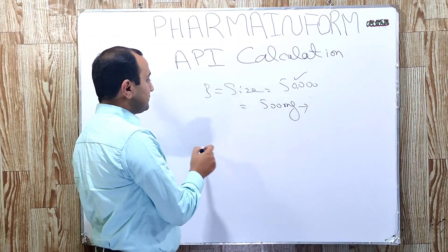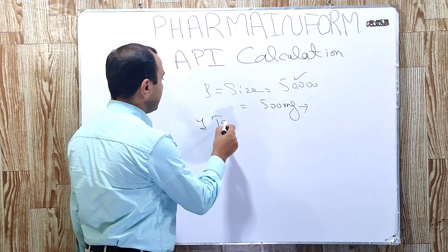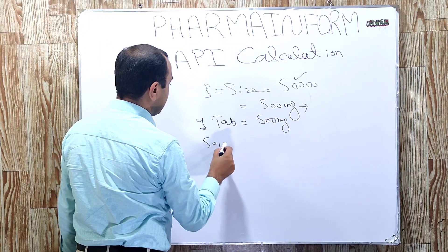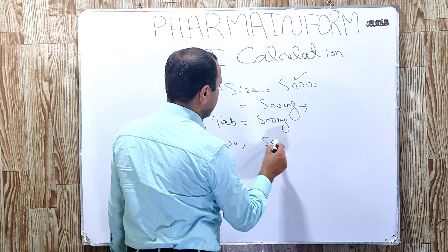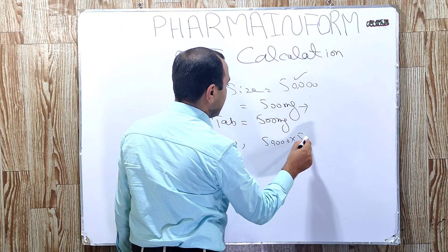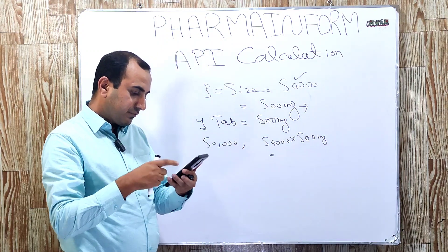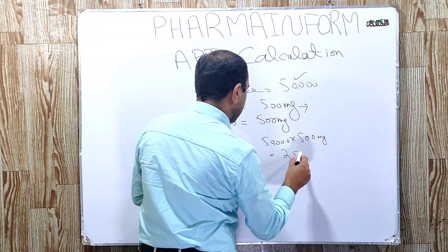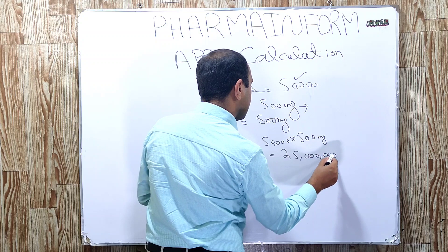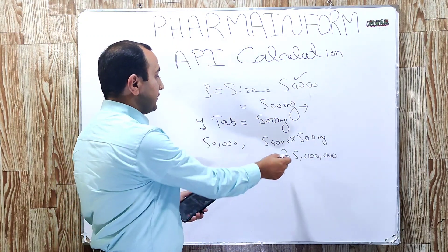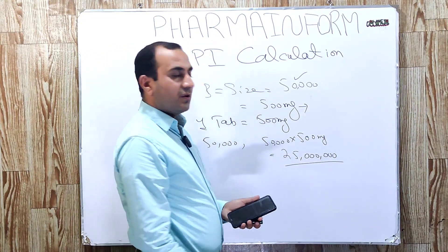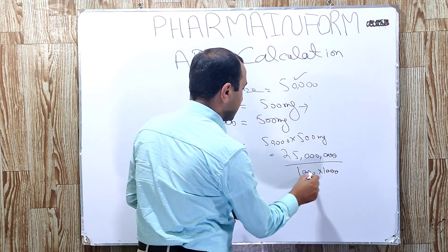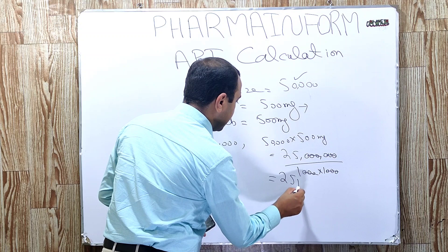The calculation is very simple. As we know that one tablet contains 500 mg, the 50,000 tablets will require 50,000 × 500 mg. The answer will be 25,000,000 mg. The answer is in milligrams, so we will convert into kilograms by dividing by 1,000 × 1,000. The answer will be 25 kg.